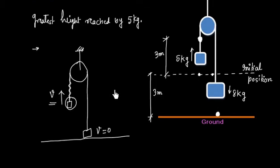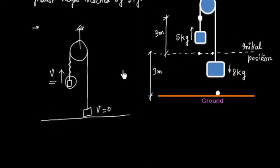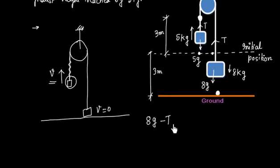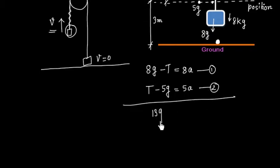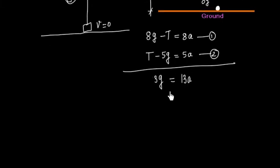Let us first find the acceleration. The forces acting are: 8g on one side and 5g on the other, with tension T in the string. For the 8 kg mass: 8g − T = 8a. For the 5 kg mass: T − 5g = 5a. Adding these two equations: 3g = 13a, so acceleration a = 3g/13.